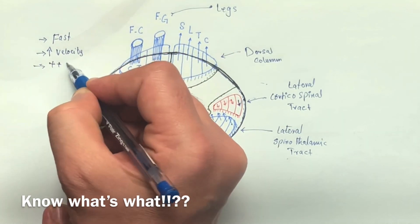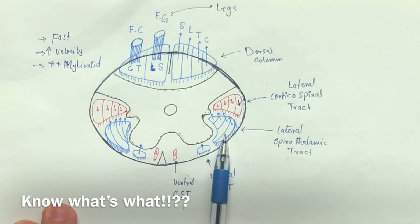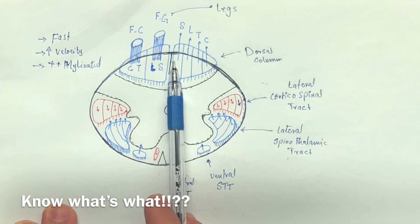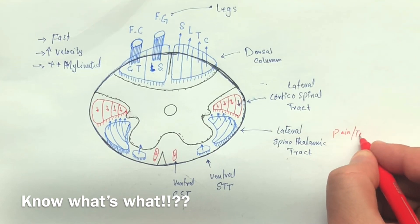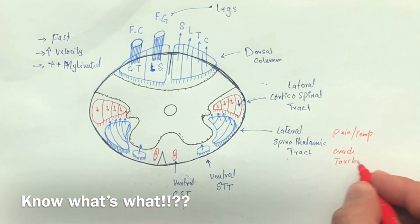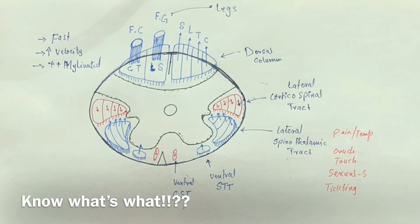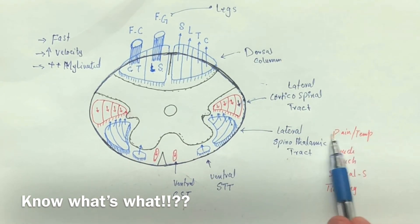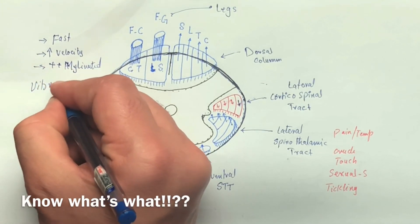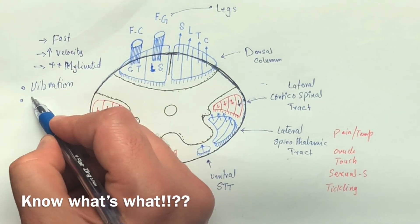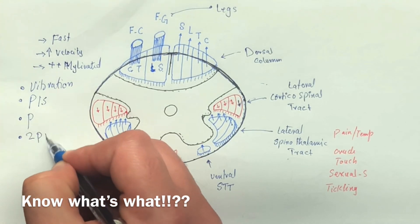The lateral spinothalamic tract is the slow one, while the dorsal column is the fast one — because it's heavily myelinated and its velocity is high. While the lateral and ventral spinothalamic system is poorly myelinated, so it's a low velocity system compared to the dorsal column. The information received by the spinothalamic tract is pain, temperature, crude touch, sexual sensation, and tickling. The dorsal column receives information like vibration, proprioception, position, and two-point discrimination.